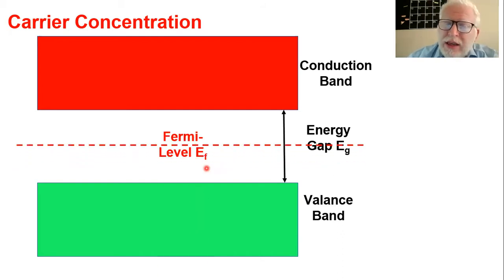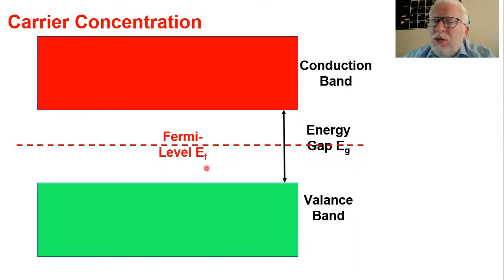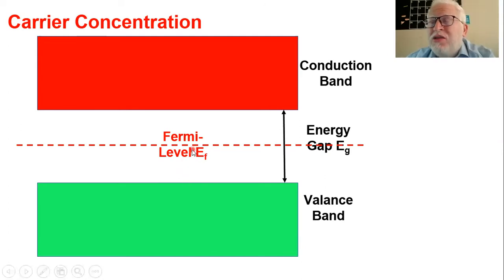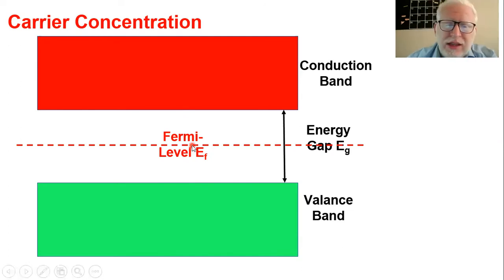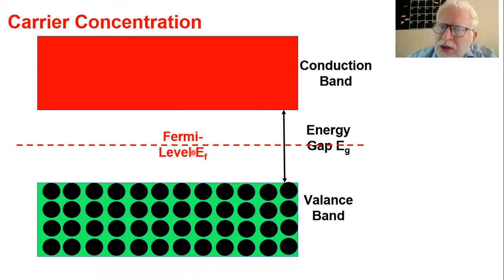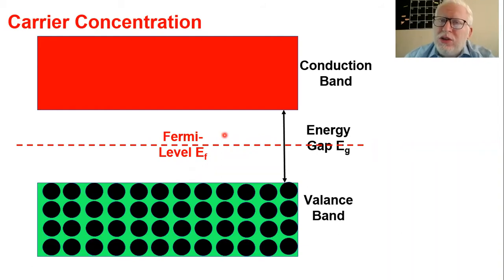We also have what's called the Fermi level, which is the indicator to indicate the ratio of the number of electrons to the number of holes. Generally, for an intrinsic semiconductor, the Fermi level is centered. Electrons generally occupy the valence band whenever there are no internal or external forces to make the electron jump to the conduction band.